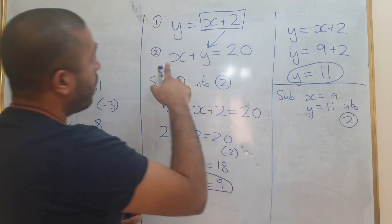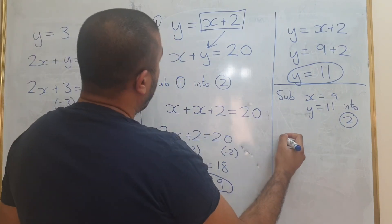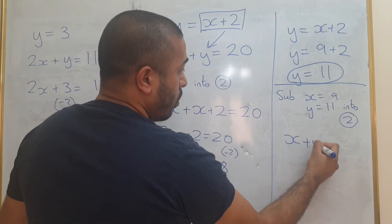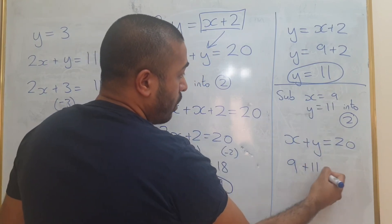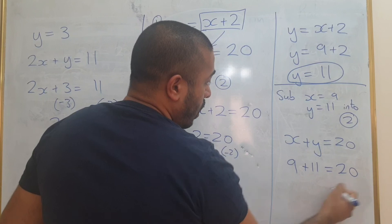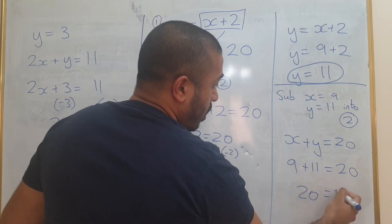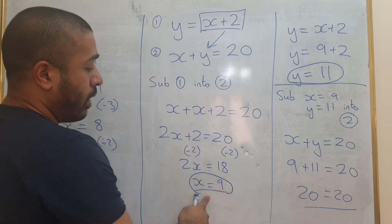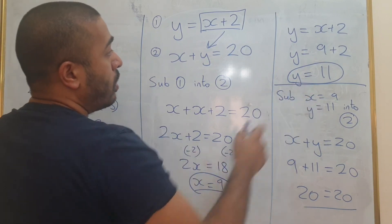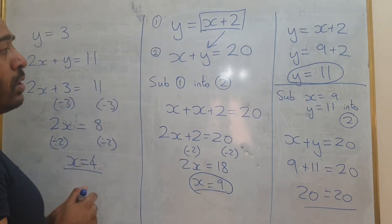So that's basically equation 2. So we're going to have x plus y equals 20. Let's check, that's 9 plus 11 equals 20. And as you can see, that balances. So our solutions are x equals 9 and y equals 11 for these two simultaneous equations.